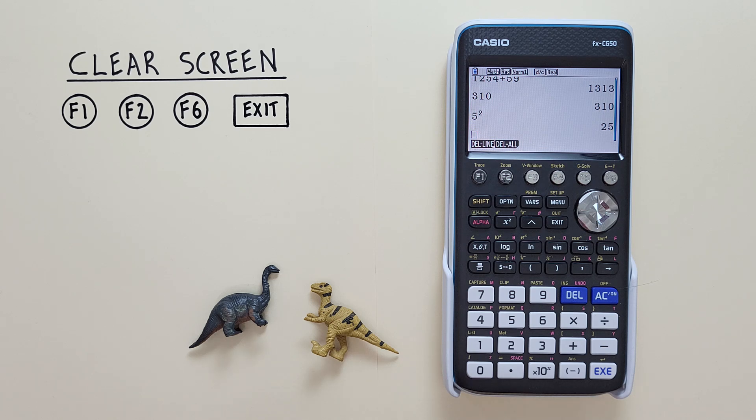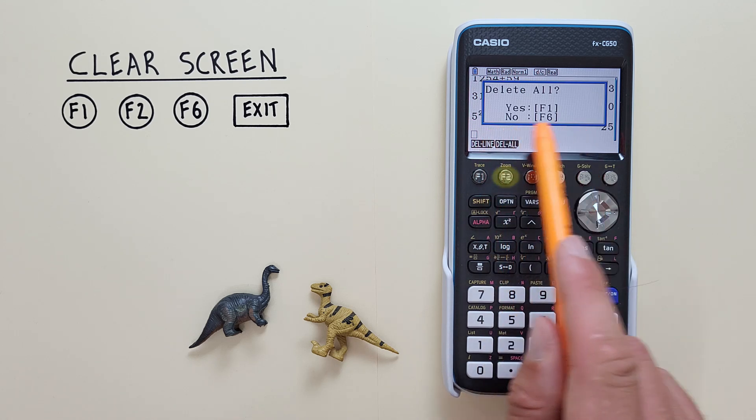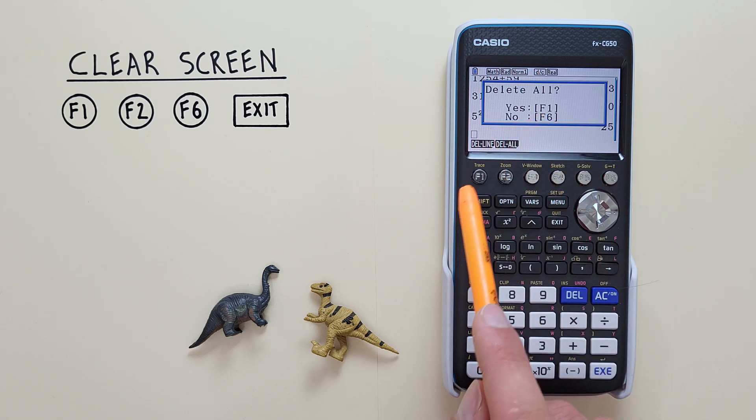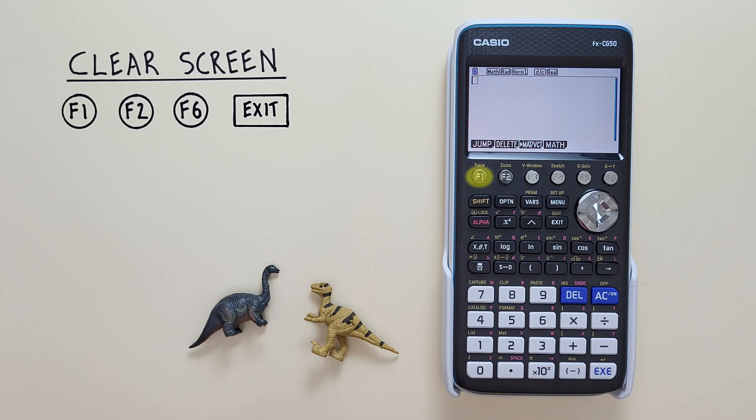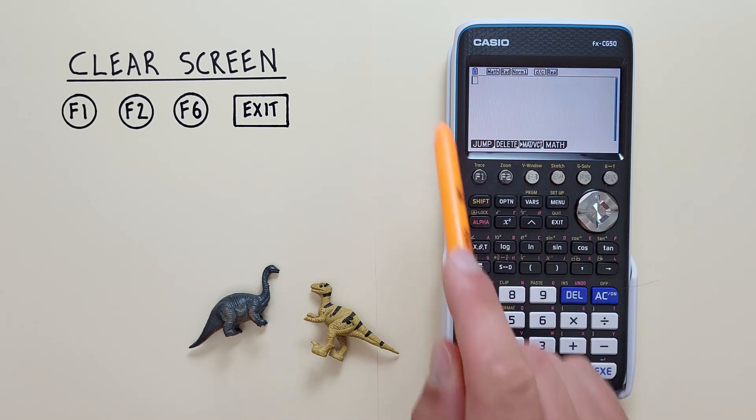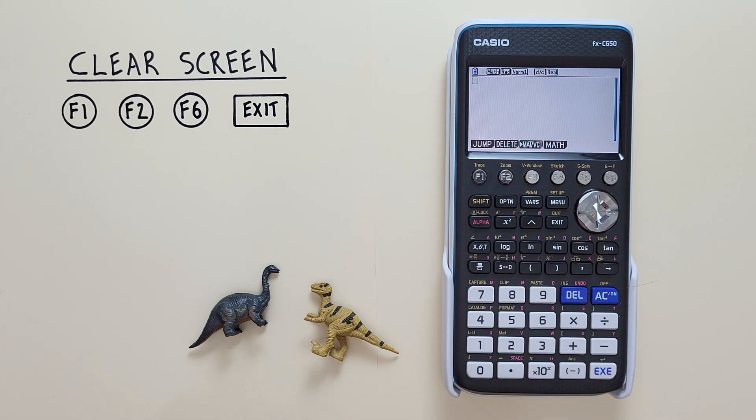If we want to clear everything from our screen and start fresh, we use F2 delete all. Again, it'll ask us to confirm, and if we press F1 yes, we'll delete everything from our screen, and we're good to start fresh.